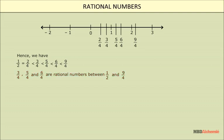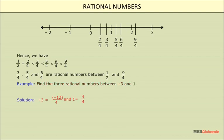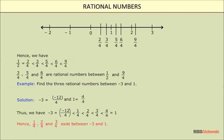Here is another example: find three rational numbers between -3 and 1. Solution: -3 = -12/4 and 1 = 4/4. Then 1/4, 2/4, and 3/4 are rational numbers that exist between -3 and 1.